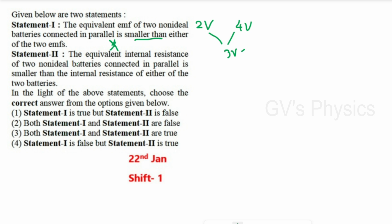Statement 2 says the equivalent internal resistance of two non-identical batteries connected in parallel is smaller than either individual internal resistance. This is correct — parallel combination always reduces the effective resistance. So Statement 1 is false and Statement 2 is true. Option 4 is the right answer.